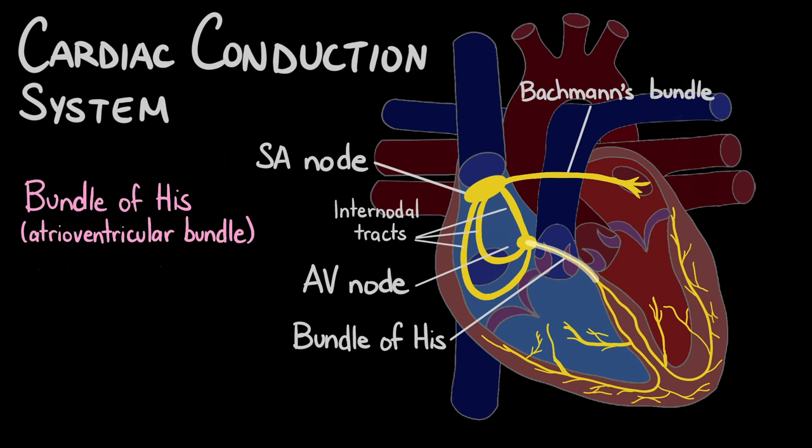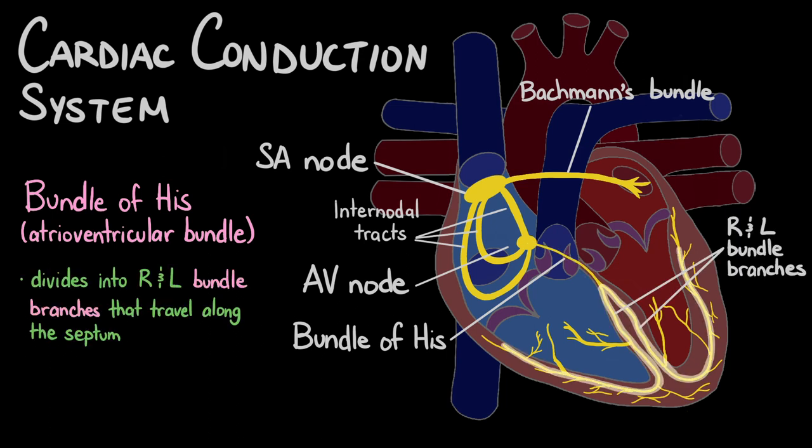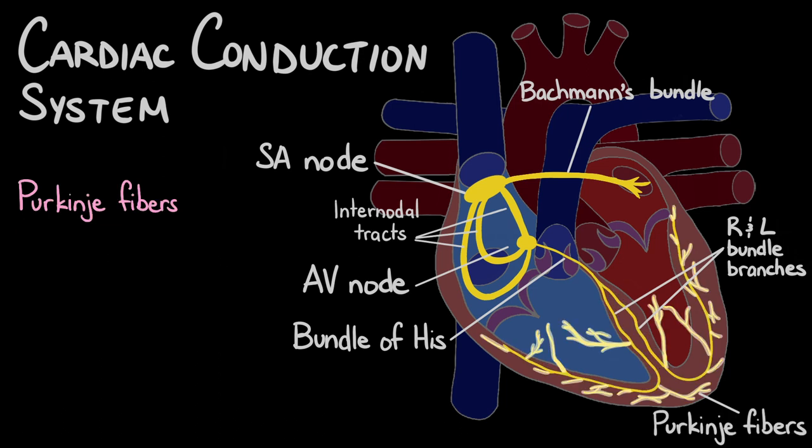The bundle of HIS divides into two branches, the left and right bundle branches. These branches travel along the septum, the wall that separates the right and left ventricle, and then divide into smaller fibers called Purkinje fibers.